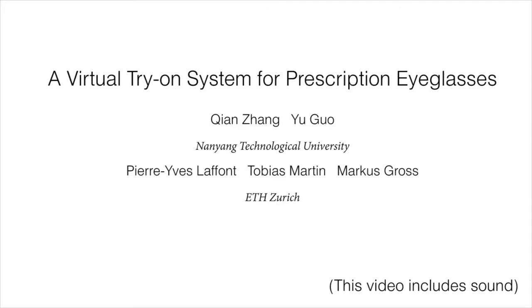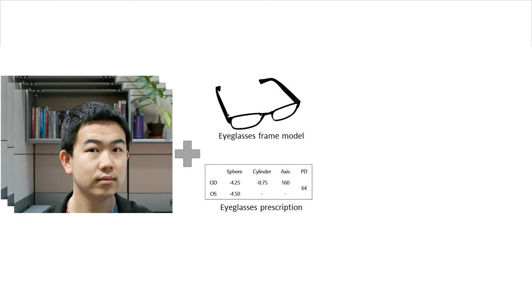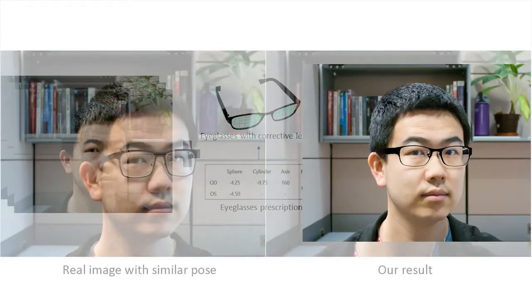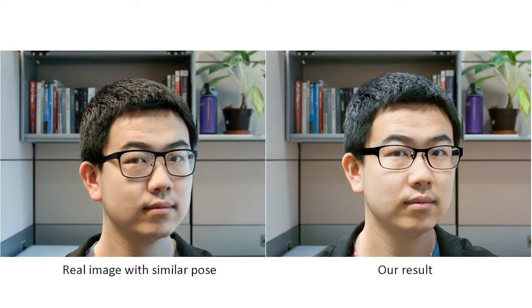A virtual try-on system for prescription eyeglasses. We propose a prescription eyeglasses try-on system which can build corrective lens model based on the user's prescription and generate synthesized video, allowing a user to virtually try on a variety of prescription eyeglasses. Our realistic simulation of refraction effect increases the perceived realism according to the user study.